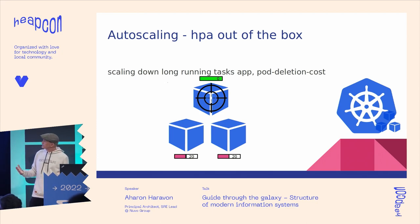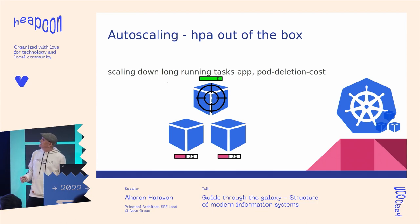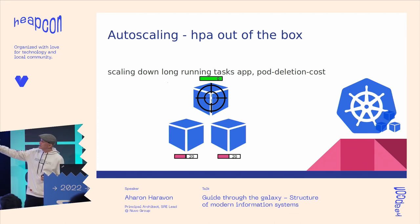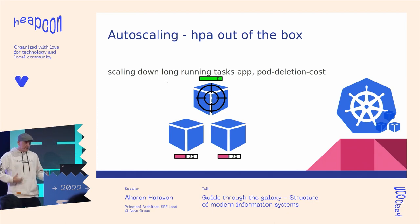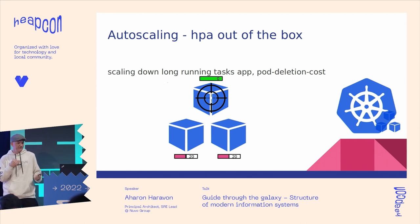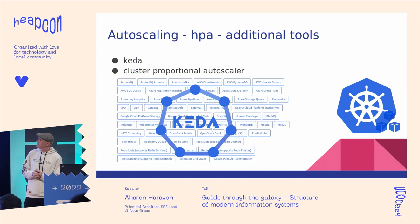Kubernetes comes with built-in horizontal pod autoscaling functionality. It is a powerful tool, but it is a bit complex to configure and it is under constant development. For example, when scaling an application down in a long-running task scenario, it makes sense to take out those pods that completed the work and not those still doing the work. Kubernetes introduced the pod deletion cost annotation so that the application can communicate this information back to it, only last year in version 1.21. KEDA is a popular companion to HPA with many event sources, therefore simplifying autoscaling configuration when it is applicable.